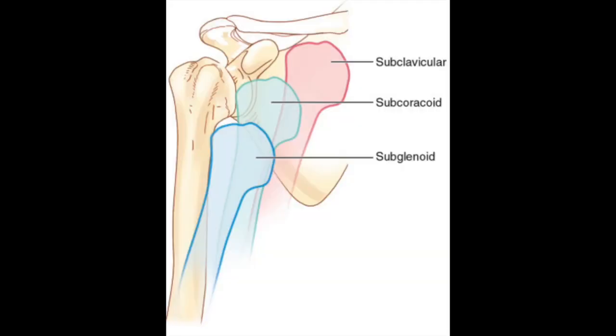If the humeral head lies anterior and underneath the clavicle or glenoid — more commonly referred to as subclavicular and subglenoid anterior shoulder dislocations — this indicates a greater degree of displacement and increases the risk for a greater tuberosity fracture and rotator cuff tears. Make sure to look at all the anatomy as well: the clavicle for any evidence of a fracture, and the chest for any evidence of a pneumothorax, possibly secondary to a rib fracture from a fall. Other associated fractures to look out for include Hill-Sachs deformities, Bankart lesions, greater tuberosity fractures, and surgical neck fractures of the humerus.